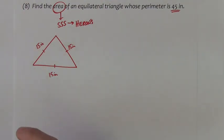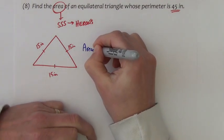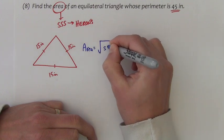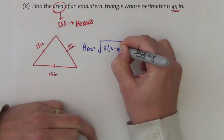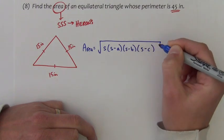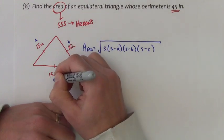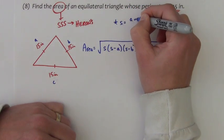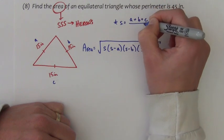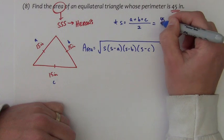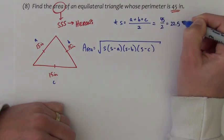Heron's area formula is this: We want S times S minus A times S minus B times S minus C, where the sides are your A, B, and C, and S is A plus B plus C over 2. So the S in this instance is 45 over 2, or 22 and a half.